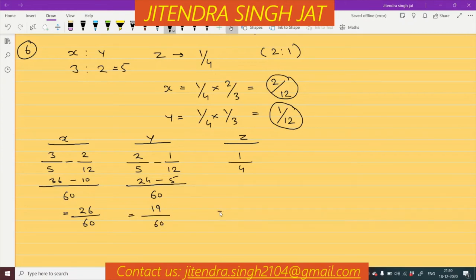And here, the ratio is 1 by 4. Now, we simplify. X is to Y is to Z. X share is 26 by 60, Y's share is 19 by 60, and Z's share is 1 by 4. Again, we take LCM because denominators are different. 60, 26 will come, 19 will come. 4, 15 is a 60, 15 is a 15. So, children, new profit sharing ratio is 26 is to 19 is to 15.